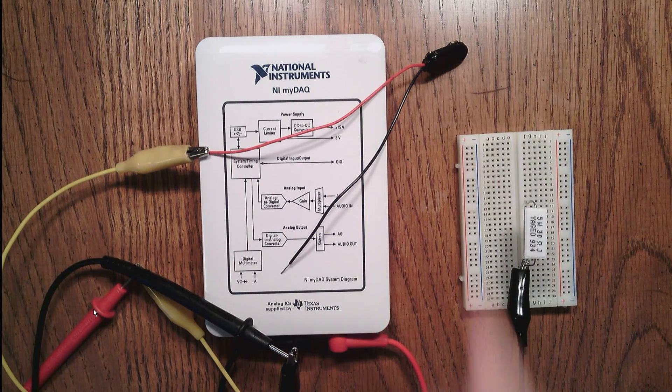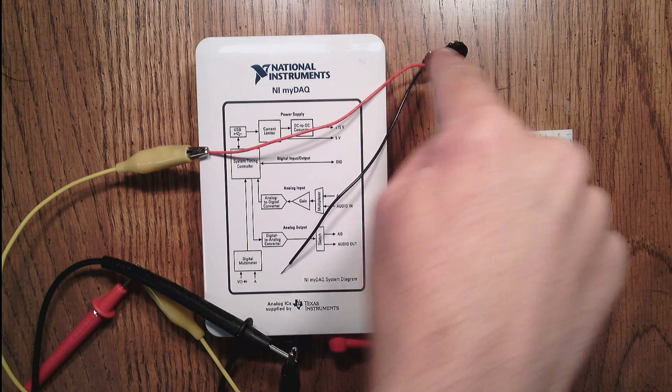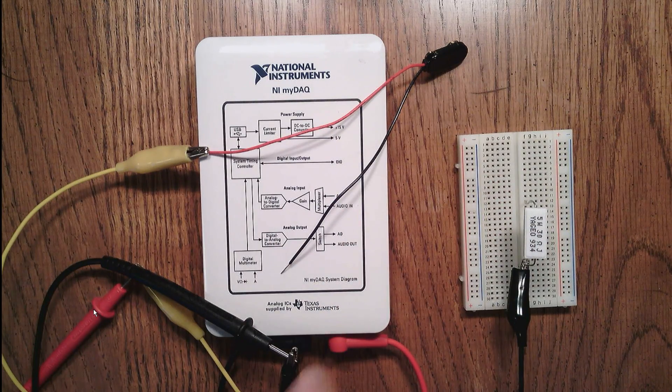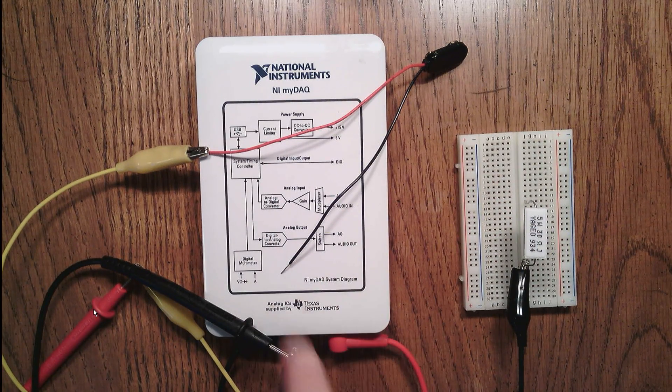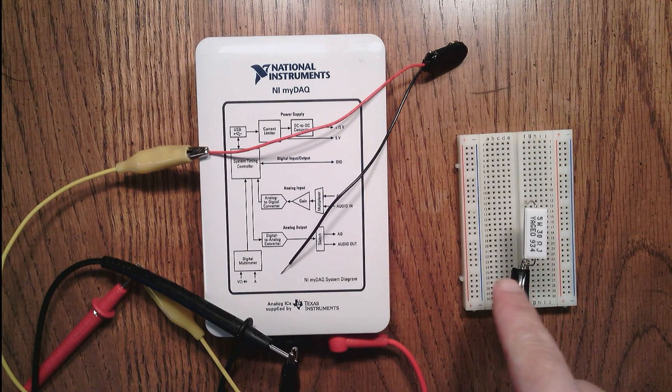In this configuration, the current will pass from the high side of the battery, through my meter, through the test lead, and into the resistor.